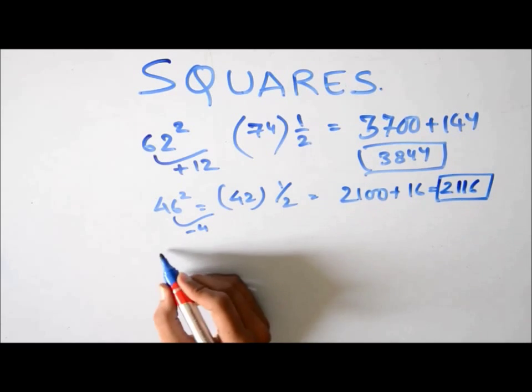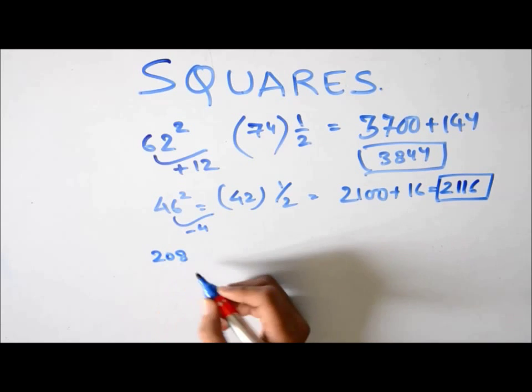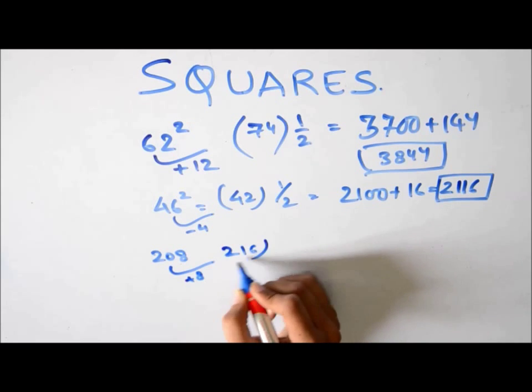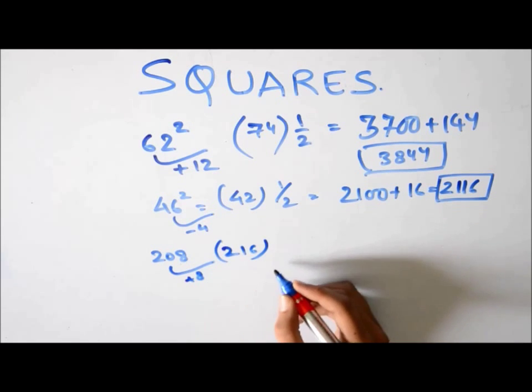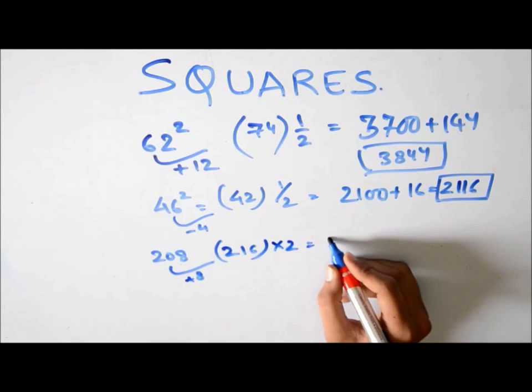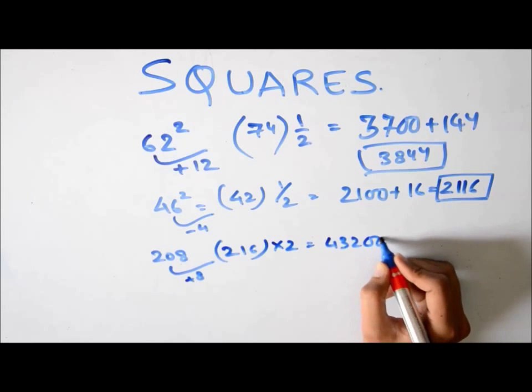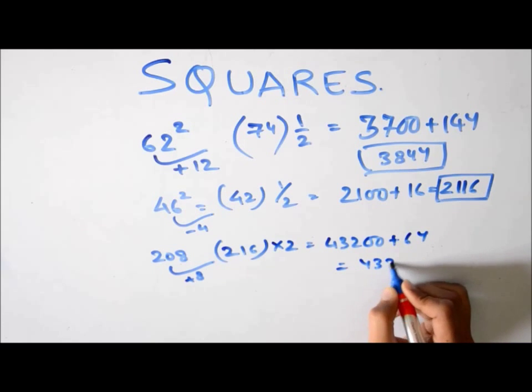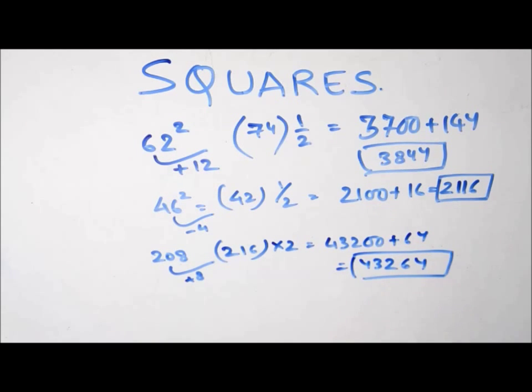And similarly if it's say 208. It is 8 greater than 200. We take base as 200. We add 8. 216. Since it's 200 divided by 2, multiply it with 2. 432 hundred. And since it's 8, 64. So it is 43264. So now this is a method in which you can calculate square of any number in just 5 or 10 seconds. So it reduces the time for solving a question drastically.